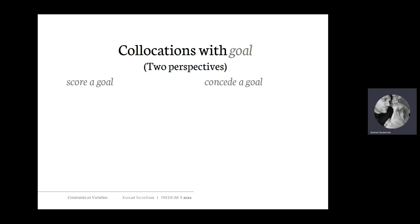Now we're going to look at a situation where the drunkard's walk is more predictable. Imagine this drunkard is still drunk, but on one shoulder he is carrying a heavy bag. As a result, he will always be tilted to one side and most of the steps he takes will be toward one direction. This is what happens in the case of collocations with the noun 'goal' in soccer — or what is known in British English as football.